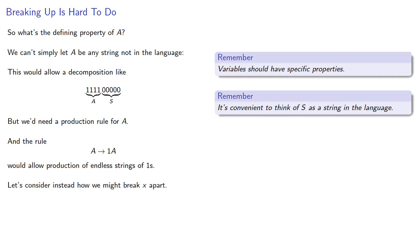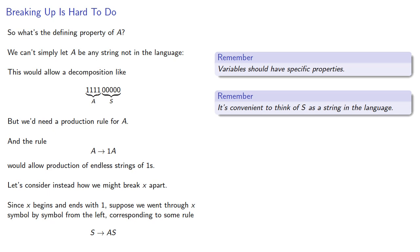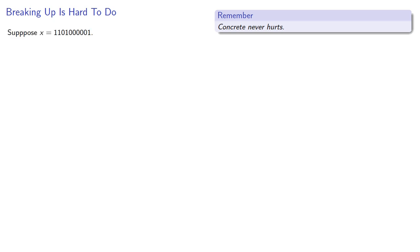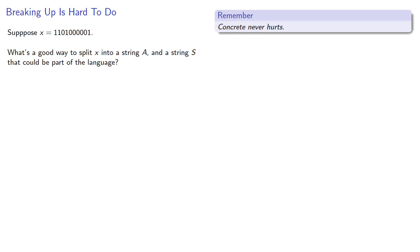Instead, let's consider how we might break our original string apart. Since x begins and ends with 1, suppose we went through x symbol by symbol from the left, corresponding to some rule S produces A S. We could then use this to decide what A should be. Remember, concrete examples never hurt, so let's take a string that begins and ends with 1 and is still in the language. What's a good way to split x into a string A not in the language and a string S that could be part of the language?